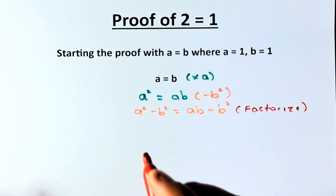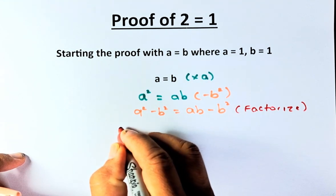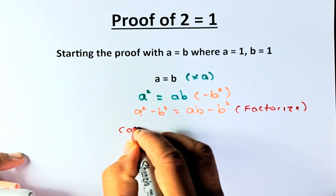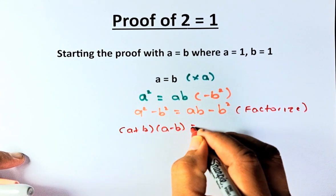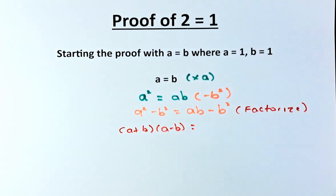You know that A squared minus B squared in math is going to be A plus B, A minus B. That is how you factorize A squared minus B squared.